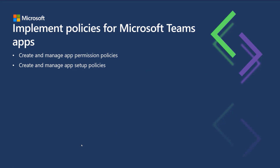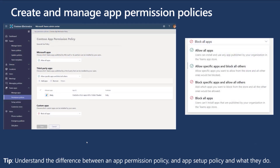Finally, we're going to be talking about implementing policies for Microsoft Teams apps. You'll create and manage app permission policies and app setup policies, and understand the differences between the two. An app permission policy controls what apps are available within the app store within Microsoft Teams — we have three different types: Microsoft apps, third-party apps, and custom apps. There are different levels: allow all apps enables them all; if you allow specific apps but block others, that's your allow list; if you have a block list, you can block specific ones but allow all others. It's worth understanding the different ways you can do that, including blocking custom code.